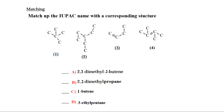Another matching question: match the IUPAC name with the corresponding structures. I have four structures — one, two, three, four — that need to match with A, B, C, and D. A is 2,3-dimethylbutene, which ends with a double bond. For A and C I will focus on structures with a double bond. Only structures three and four have a double bond. Structure three has no substituents.